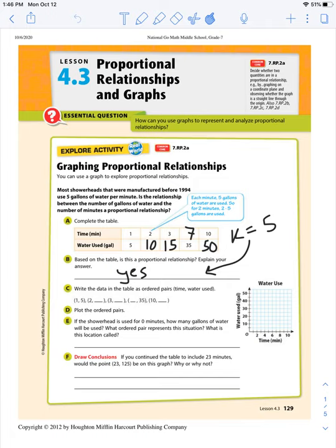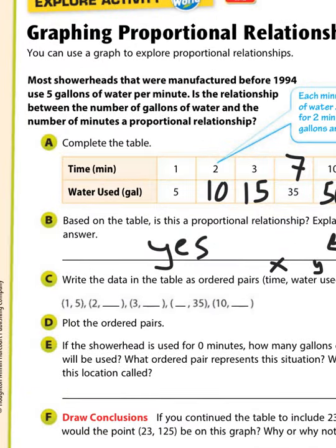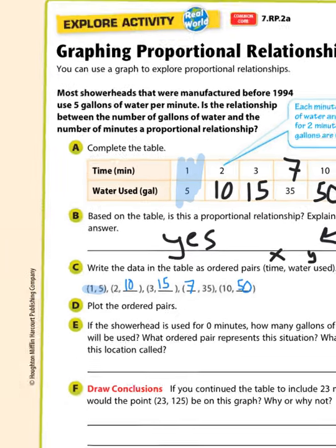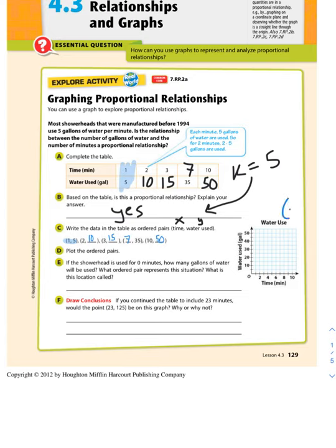So now let's see how this would look on a graph. We're going to write the data in the table as ordered pairs. We're going to use time for our x variable and water for our y variable. So we have first ordered pair 1, 5. That's right here. So now we have 2, 10, 3, 15, 7, 35, and 10, 50. Now we're going to plot the ordered pairs. Remember when we plot ordered pairs, we always go over first, then up. X, comma, Y.